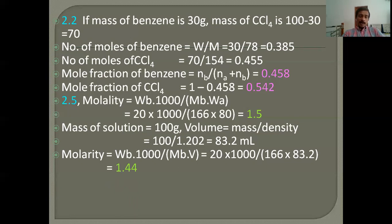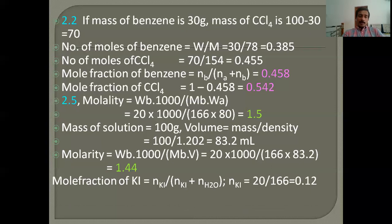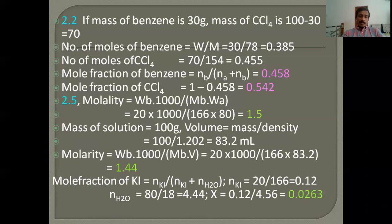To find mole fraction of KI, calculate moles of KI = 20 / 166 = 0.12 mol, and moles of water = 80 / 18 = 4.44 mol. Mole fraction of KI = 0.12 / (0.12 + 4.44) = 0.12 / 4.56 = 0.0263.